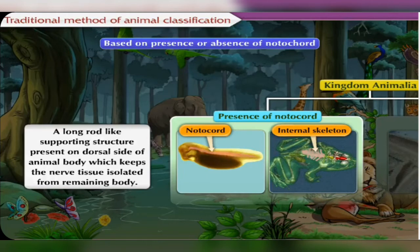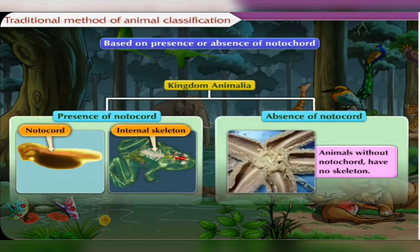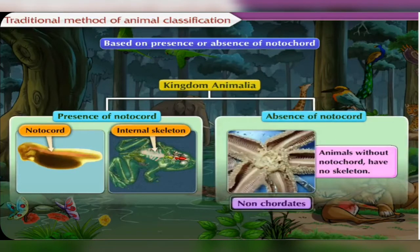Based on this criteria used for classification, the animal kingdom was divided into two groups: non-chordates and chordates. Let us discuss about each of them in brief.